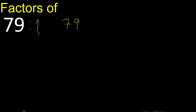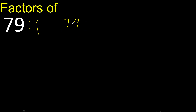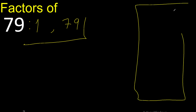79 can be divided by 79, but 79 is already listed, therefore we finish finding factors. 79 can only be divided by 1 and 79 because it is a prime number. More examples here.